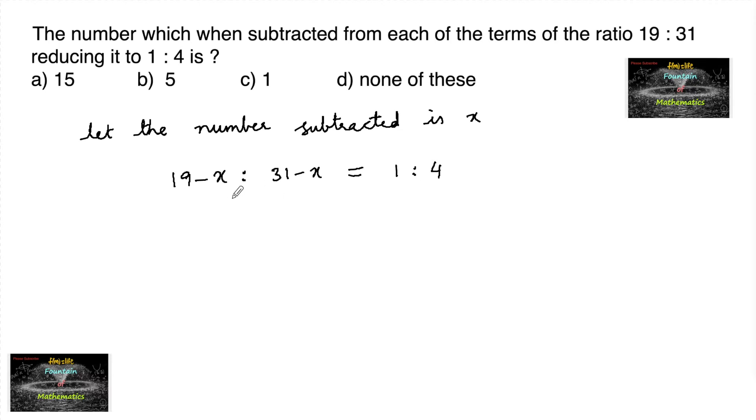Using the concept product of extremes equals product of means, 4 times 19 minus x is equal to 1 times 31 minus x, so we'll have 76 minus 4x